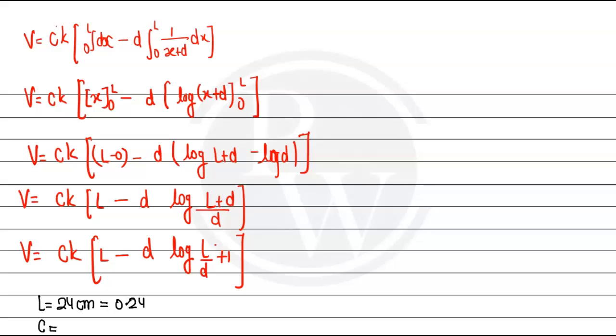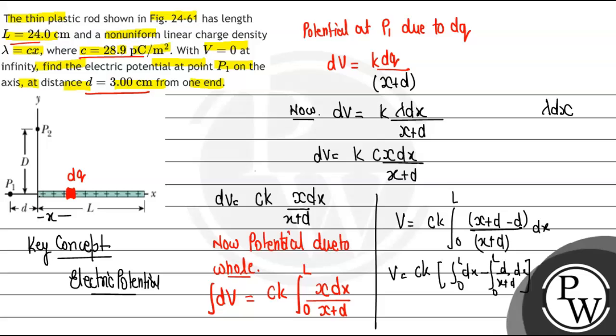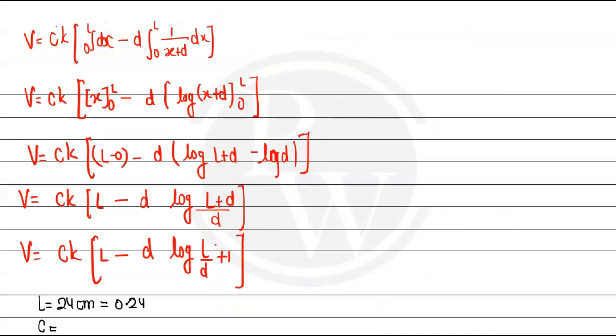The value of C we have as 28.9 picocoulombs, so that is 28.9 times 10 to the power minus 12 coulombs per meter squared. And the value of D is going to be 3 centimeters, so that is 0.03 meters.